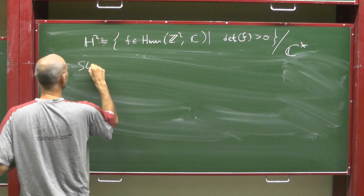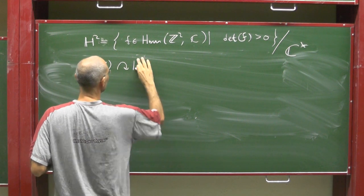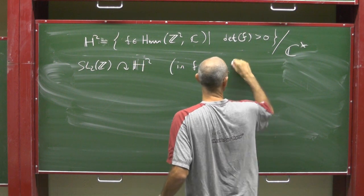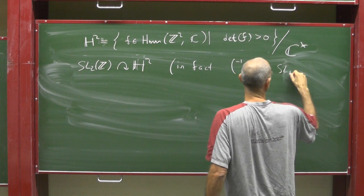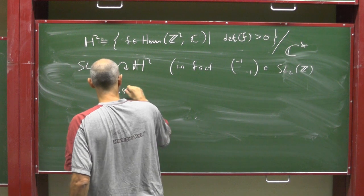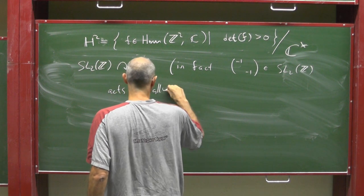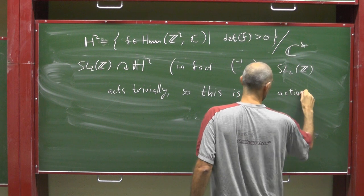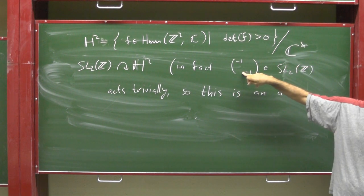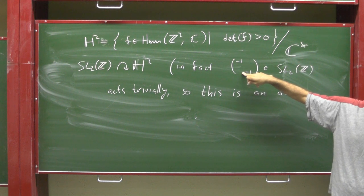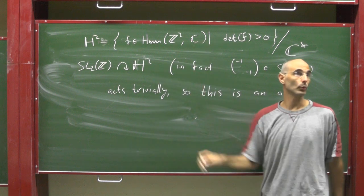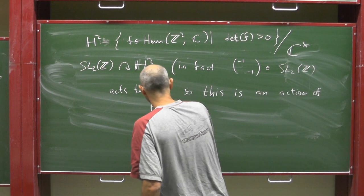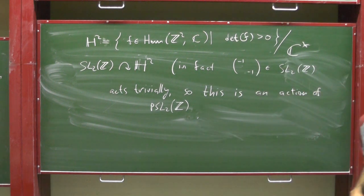SL2Z acts on H2. In fact, minus 1, minus 1 in SL2Z, the action of this one is absorbed into the rotation. This is multiplication by minus 1 in SL2Z, multiplication by minus 1 from C star. So this is an action of PSL2Z, because SL2Z is modulo minus 1.